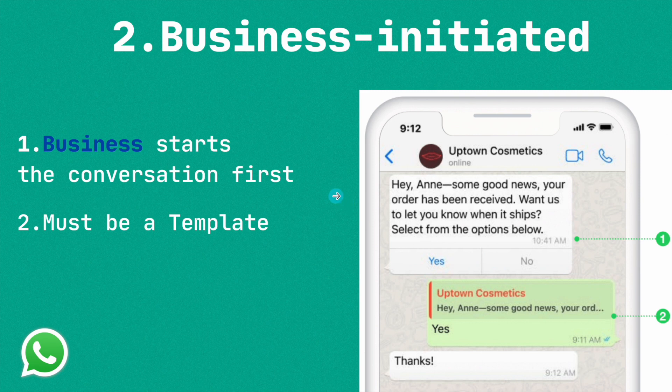So here are two key points about business-initiated messages: business-initiated means the business starts the conversation first, and the API owner wants to start the conversation with their customers. In order to start the conversation with the customer, we have to send a template — that is the mandatory thing.